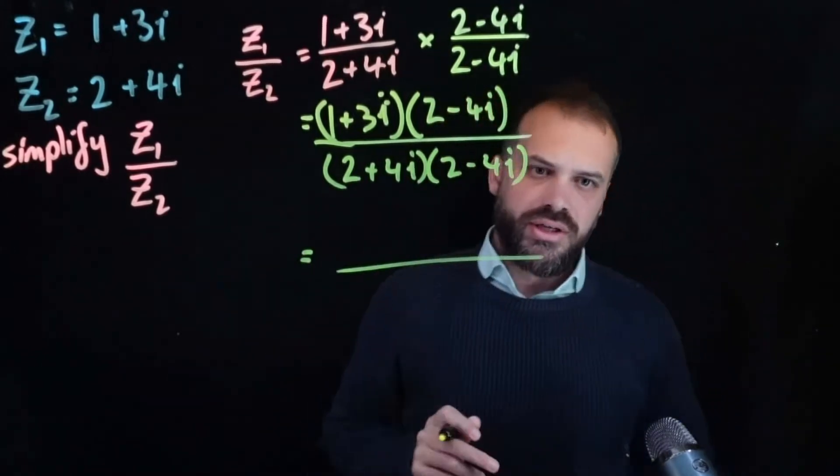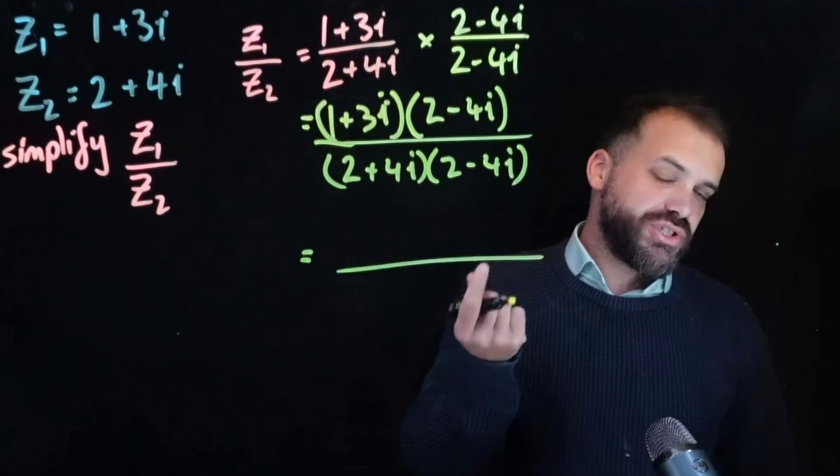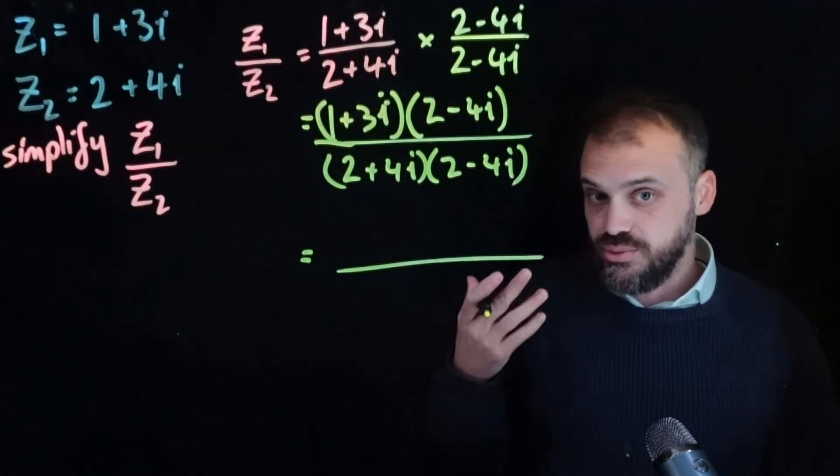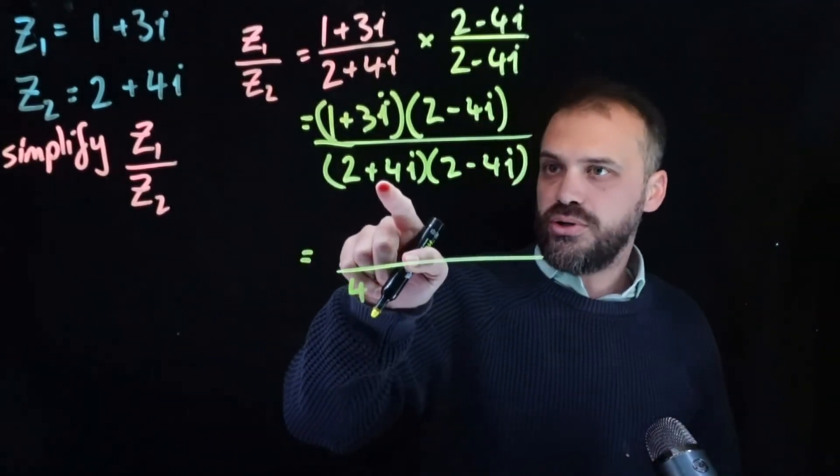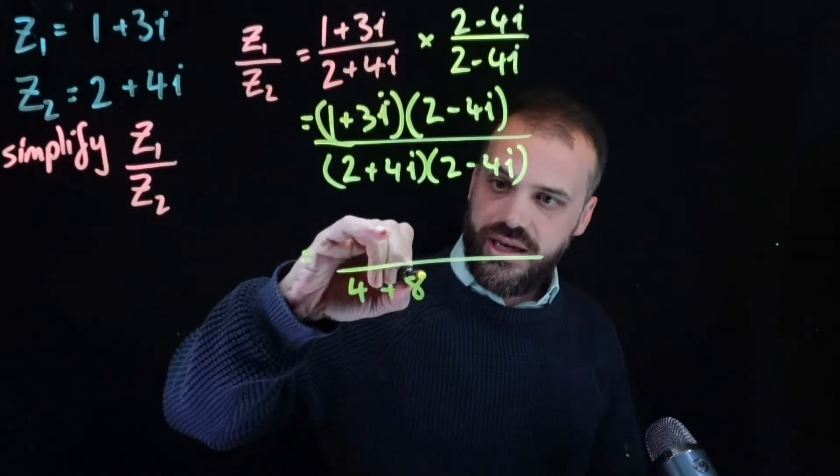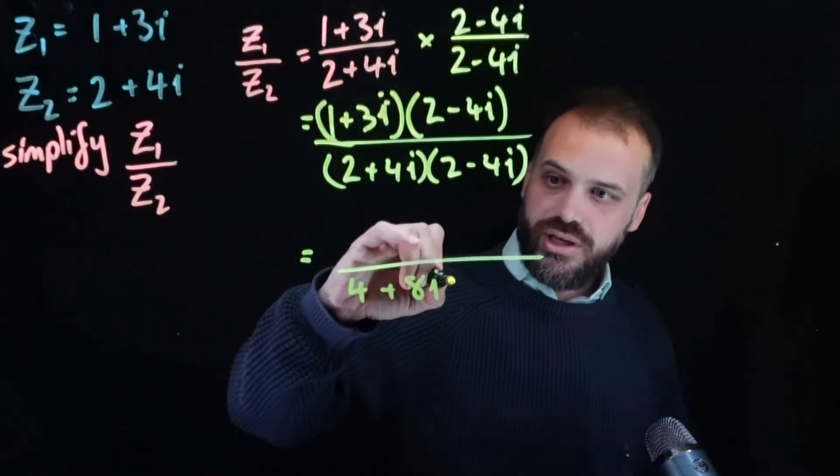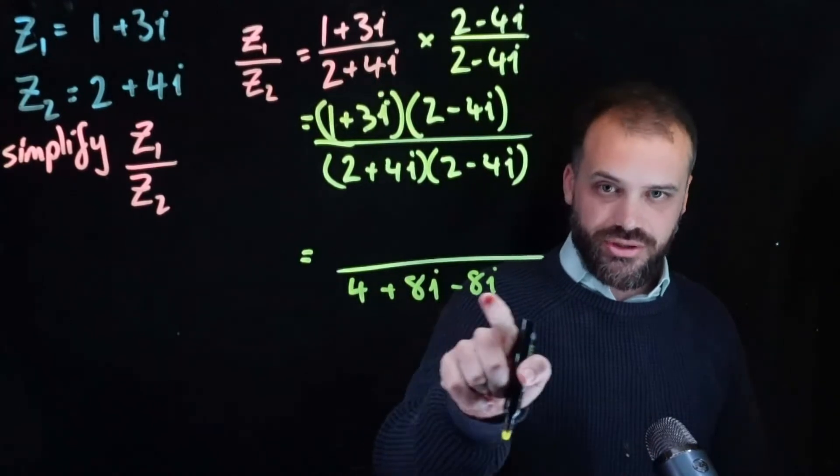Alright, so let's deal with the denominator first, because that's the interesting part of this, or the thing that you really need to understand is what's going on. 2 times 2 is 4. Positive 4i times 2 is positive 8i. 2 times negative 4i is negative 8i. They're going to cancel each other out.